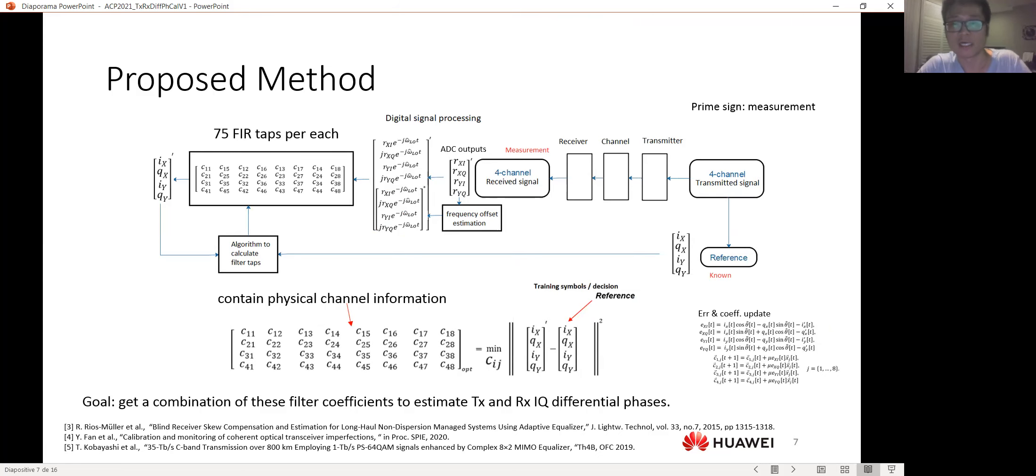For the implementation, first we transform the ADC outputs to four complex inputs of the filter. We multiply a phasor that is for frequency offset compensation to each of the ADC outputs. And also, we multiply the imaginary constant J to the quadrature part. Then, we duplicate all these four new inputs to another four set of inputs, but they are just the complex conjugate of the previous four inputs.